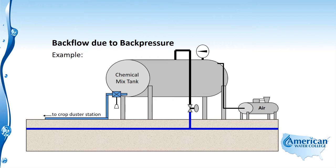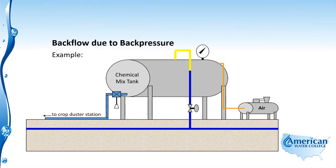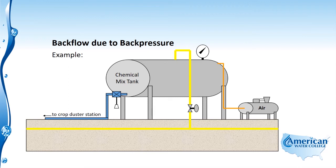Let's take a look at some backflow due to back pressure. Here we have a chemical mix tank — this represents our agricultural chemical mix tank, and you can see that it provides chemical to crop dusters. This tank is pressurized with an air compressor, and it takes water from the potable water system directly into the tank. When we open this valve, we have cross-connected the systems. Then we shut the valve, the air compressor kicks on, and the tank is pressurized. As tank pressure increases to greater than system pressure, any leakage through that valve will allow flow of that chemical into the potable water system. This is an example of backflow due to back pressure.